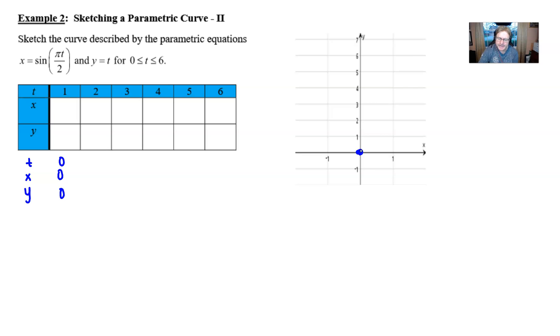Things start to get a little bit more interesting when you plug in these other values. So if you plug in 1, you've got the sine of pi over 2. The sine of pi over 2 is indeed 1.